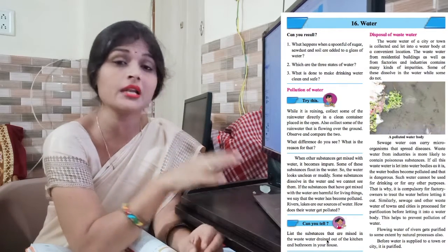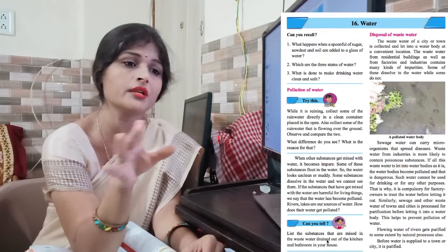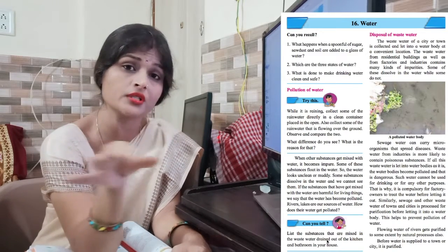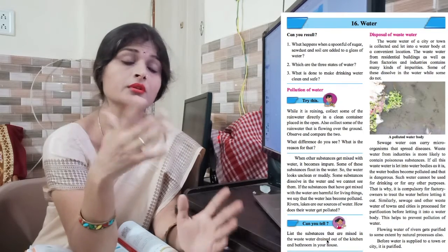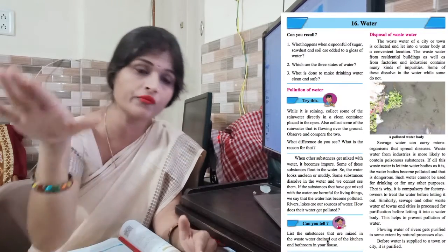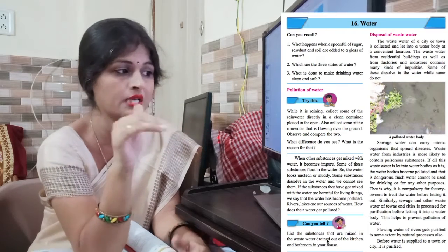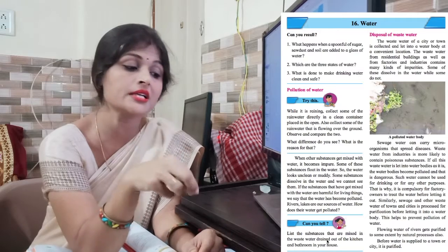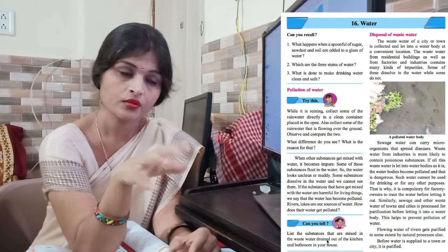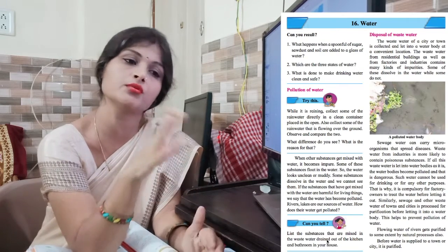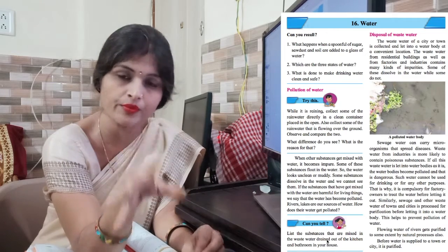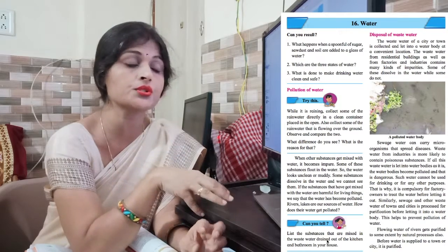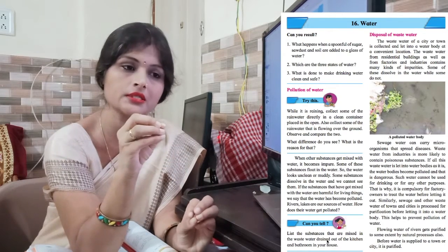Sometimes you can see rubbish floating in the water when rain flows on the ground. The second thing is that some harmful things are in the water but you cannot always see them — some impurities are not visible but they are bad things.